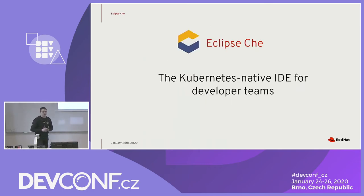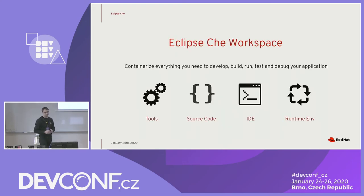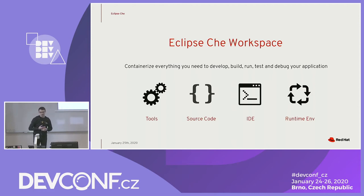Eclipse Che is a Kubernetes-native IDE for developer teams and it provides Kubernetes-native workspaces. Workspaces inside Che are Kubernetes pods and everything in Eclipse Che has been containerized — editors, plugins, tools, environments — all are working inside containers. And you can bring your runtime applications inside your workspace.